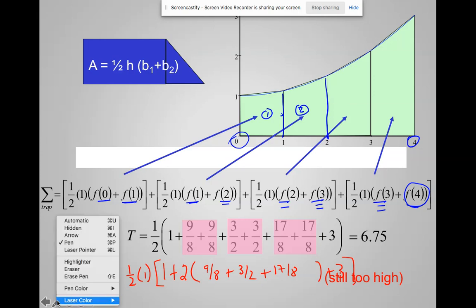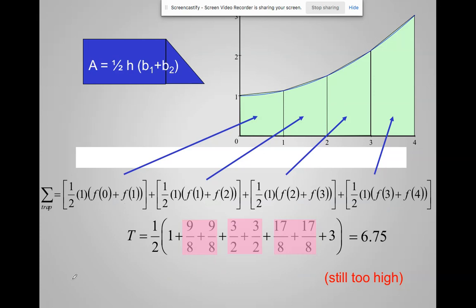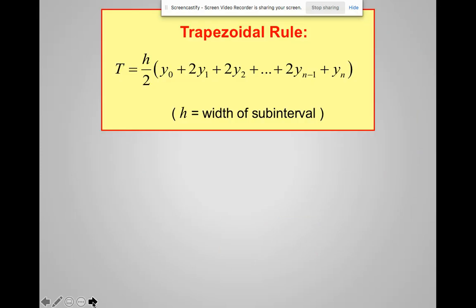And again, this is still too high. Why? Why is this estimate still too high? Why is the trapezoid too high? Not because the function's increasing, because the function is concave up. Ah! Concave up. I'm over exaggerating each piece. So when would the trapezoidal rule be too low? Right, when you're concave down. So here's what the trapezoidal rule looks like.